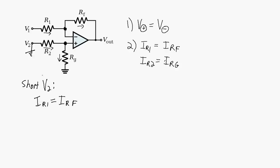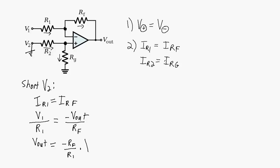Since this point is virtual ground, IR1 will be V1 over R1. And since this is virtual ground, the voltage across RF will be 0 minus Vout, which is just negative Vout divided by RF. We can rearrange this equation and we get Vout equal to negative RF over R1 times V1. We should call this Vout1, because this is the Vout due to V1 only. So Vout1 equals negative RF over R1 times V1.